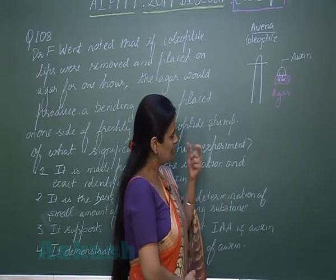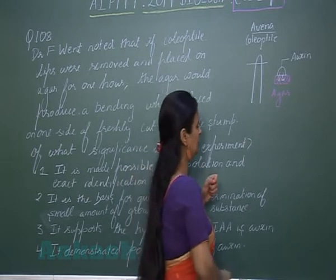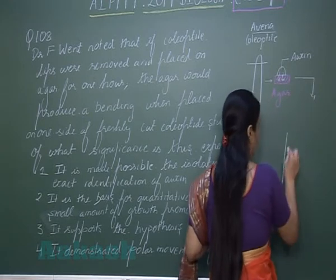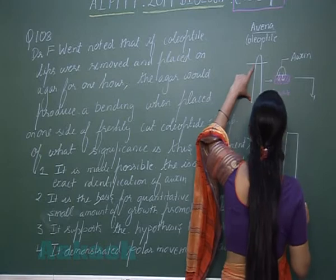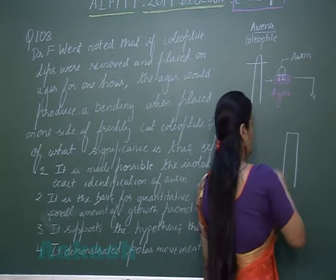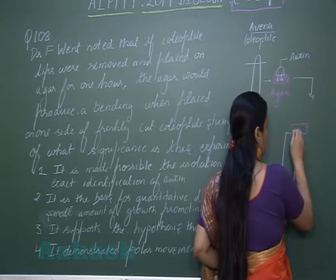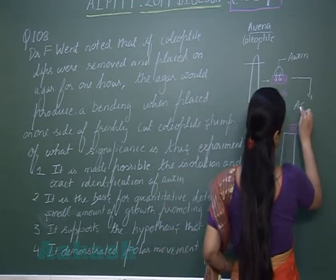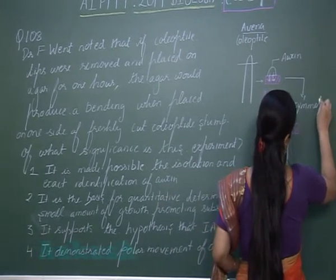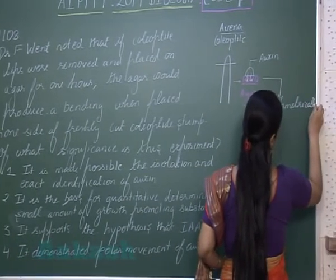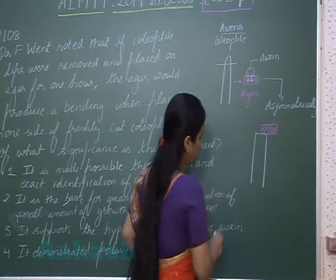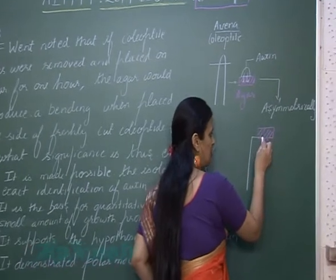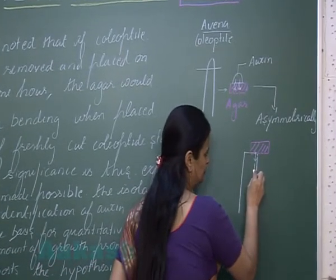Now this agar block which contains auxin was placed on the stump of Coleoptile — that is the lower part — asymmetrically. In the agar block there is presence of auxin, and from the agar block the auxin shows basipetal movement.